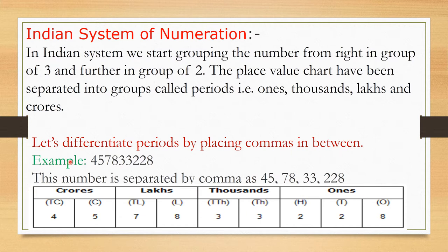For example, the number 4,5,7,8,3,3,2,2,8 — how do we place commas? According to the Indian system of numeration, we make groups and then place the commas. This number is separated by commas as 45,78,33,228.